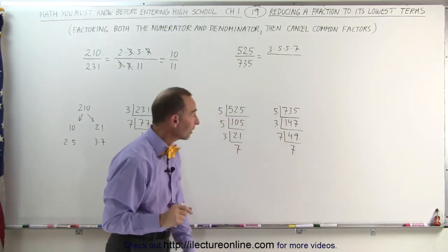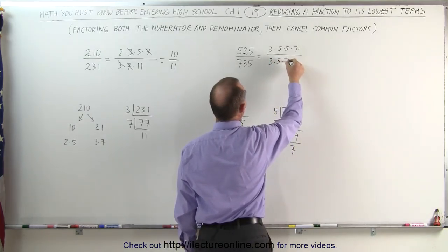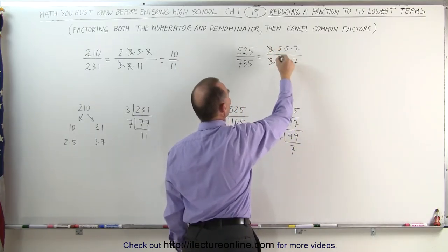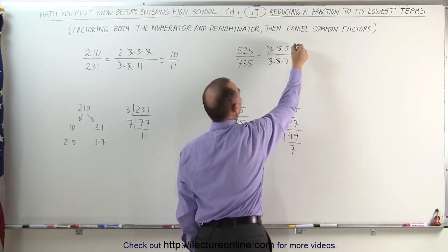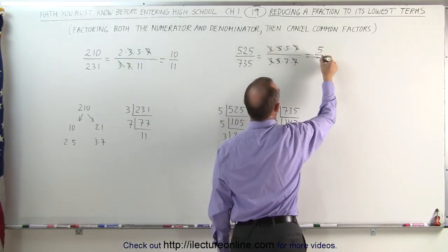Which means the denominator can be written as the product of 3 times 5 times 7 times 7. Now the fun part, we can cancel out the 3's, we can cancel out the 5's, we can cancel out one of the 7's, and we're left with 5 divided by 7.